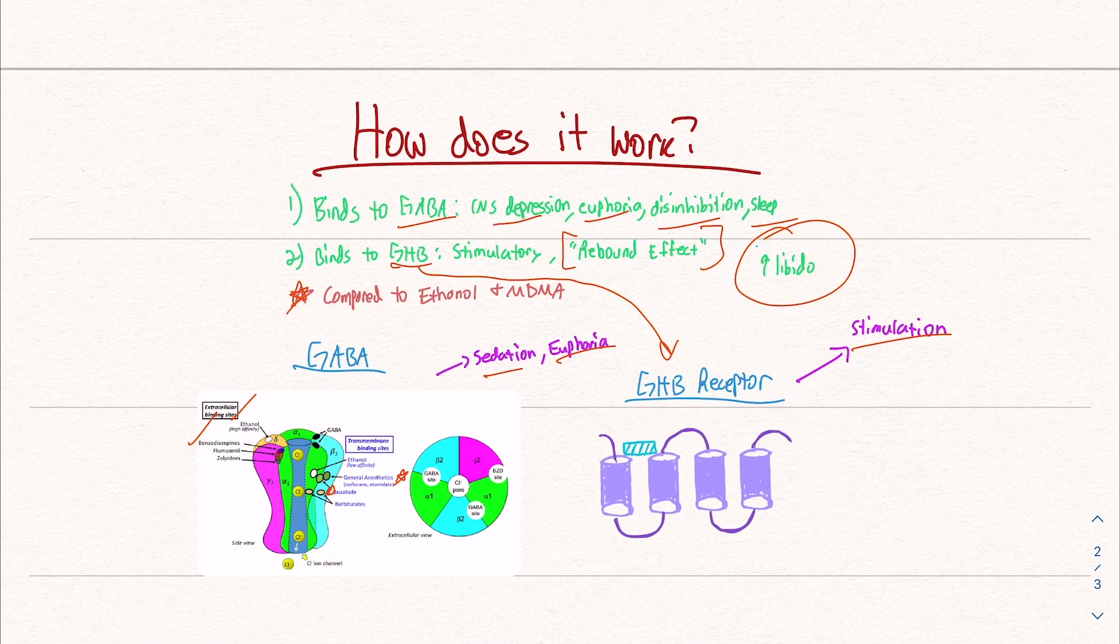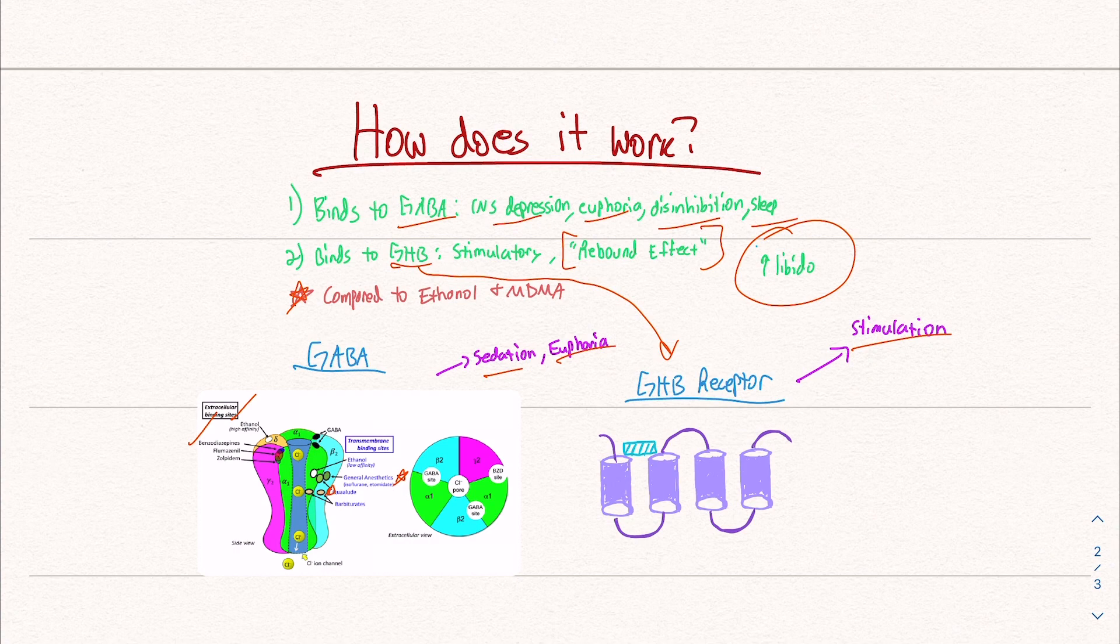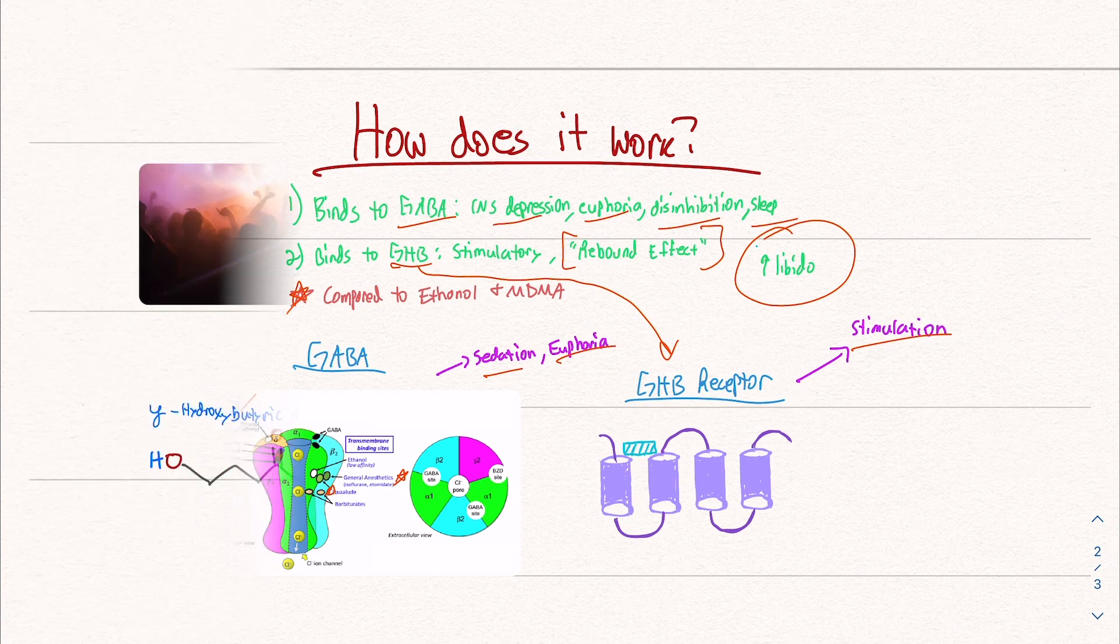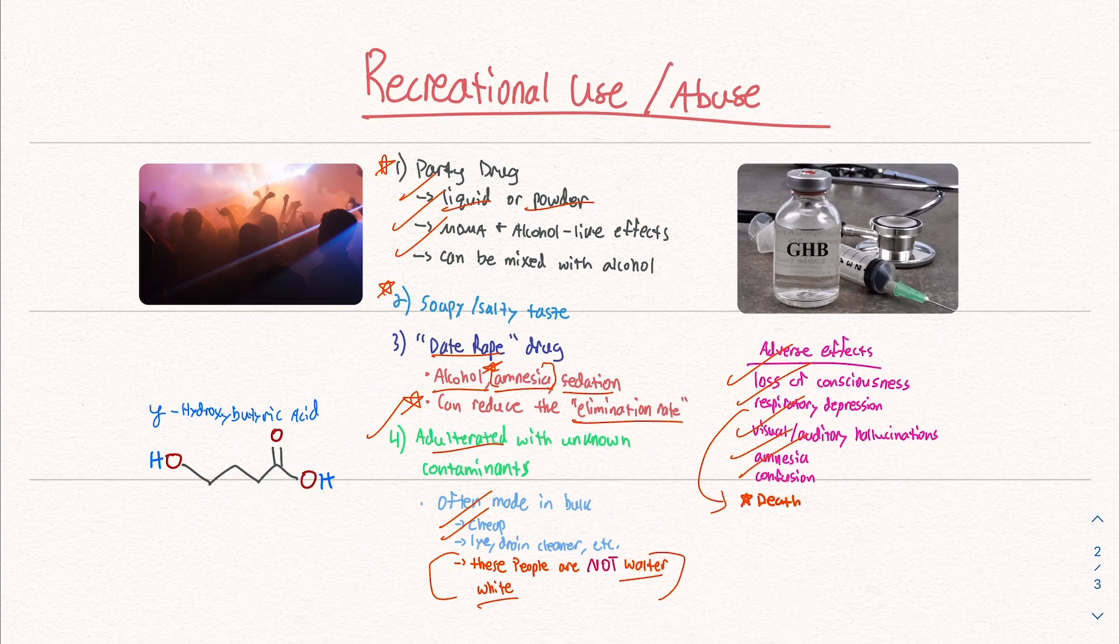It works by connecting to the structures that result in central nervous system depression, euphoria, and disinhibition. It binds to the GHB receptor, which does a stimulation-like effect.